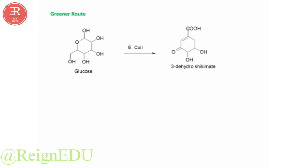Glucose is treated with E. coli bacteria to produce 3-dehydroshikimate. The same product is again treated with E. coli to get cis-cis-muconic acid. When reactions are carried out in the presence of bacteria, the mechanism is uncertain. As we can see in the product, both the priority groups are on the same side, and therefore it is called cis-cis-muconic acid.